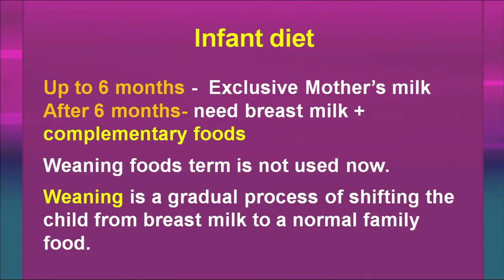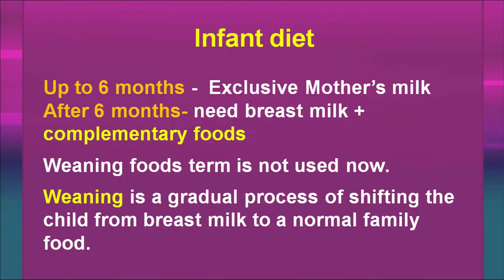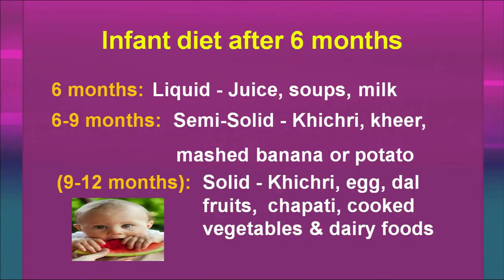Infant diet up to 6 months is exclusive mother's milk. After 6 months, it is mother's milk plus complementary food — meaning you need extra food. We now use the word complementary food; earlier, the term was weaning food. Weaning is a gradual process of shifting the child from breast milk to normal family food. After 6 months, initially, liquid foods in the form of juice, soup, or milk can be given. Between 6 to 9 months of age, semi-solid foods like khichdi with ghee, mashed banana, or mashed potato can be given.